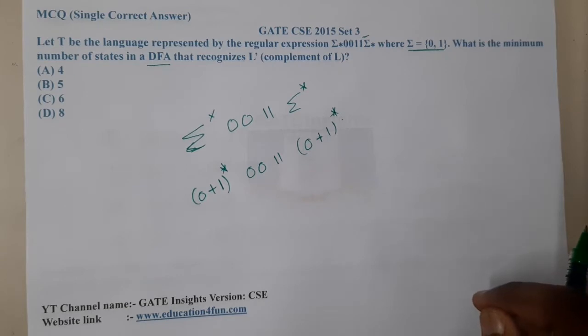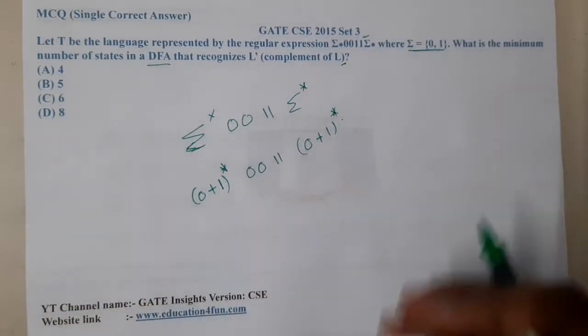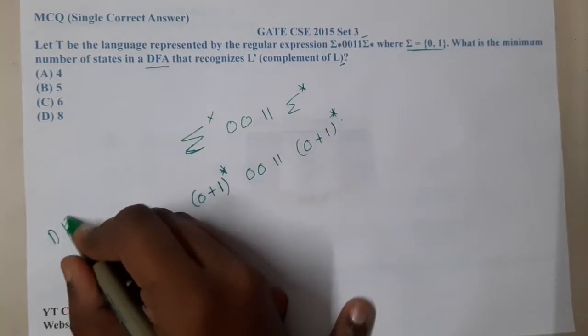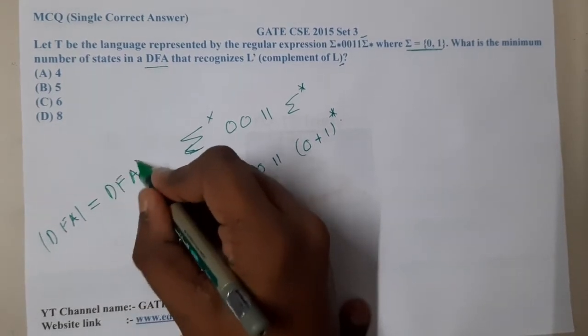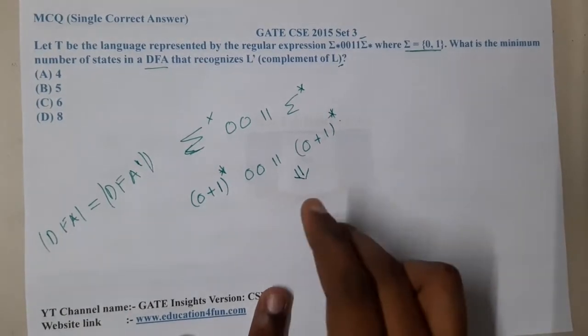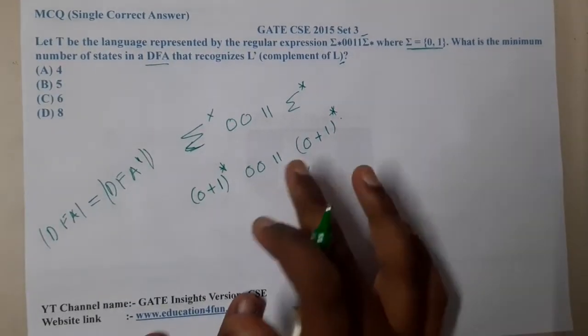To be clear for this particular thing, there is a small trick. Whenever they are asking the number of states in a complement of DFA, always the number of states in a DFA will be exactly equal to the number of states in its complement. So now you can directly construct a DFA for this and that is the exact result here.